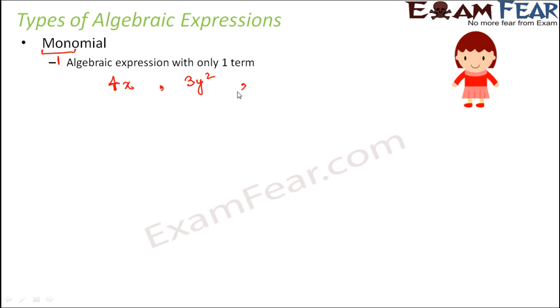So here you see you just have one term. Nothing is getting added to 3y squared or nothing is getting added to 4x. So therefore only one term is present. Something like 3xy, this is also single term present. So these are examples of monomial.